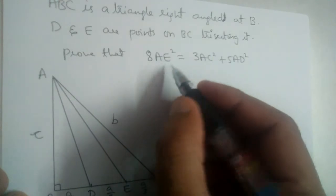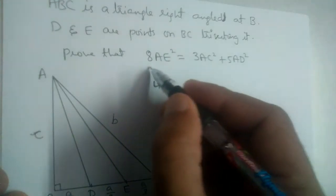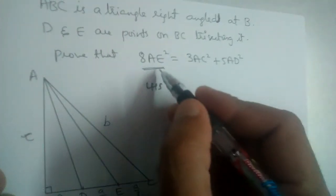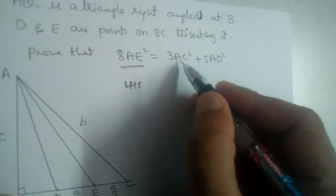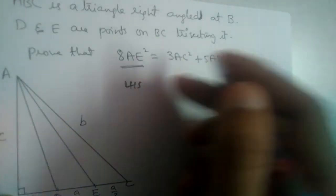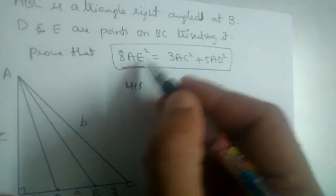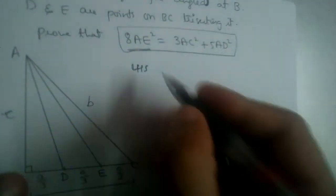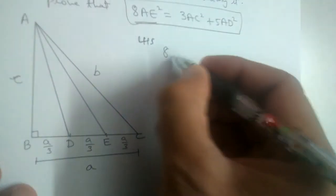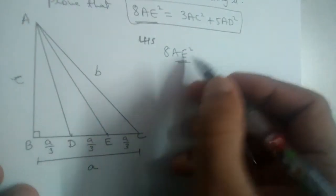We need 8AE². Let us take LHS first. We will find the value of 8AE² and then take RHS, finding the value of 3AC² + 5AD². Both values will be equal, hence proving 8AE² = 3AC² + 5AD². So first let us take LHS, which is 8AE². First let us find the value of AE².